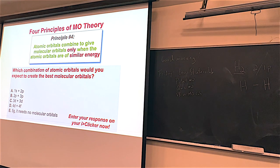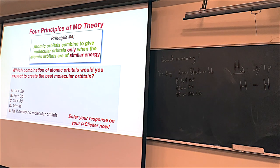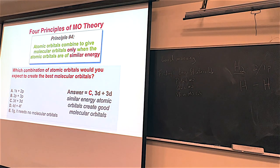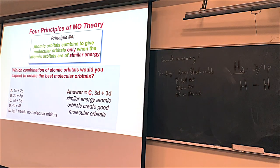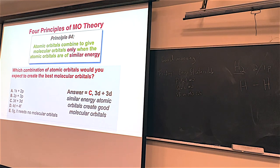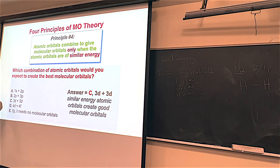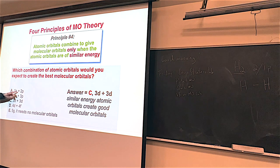Which one of these combinations would you expect to have the best molecular orbitals? Here's 1s plus 2p, 2p plus 3p, 3d and 3d, 4d and 4f, and 5g. Well, if they have to be similar energy, you'd ideally like them to be the same kind of orbital. So which would you expect to have the best overlap? C — 3d and 3d should be the best orbitals possible. For this class, we can at least predict that because they're the same types of orbitals, they should have the best overlap. Like 1s and 2p, there's quite an energy differential between them.